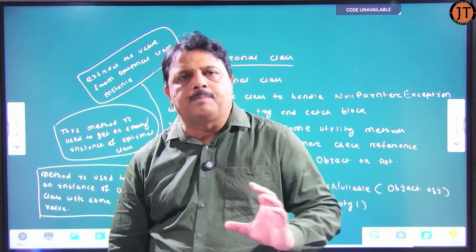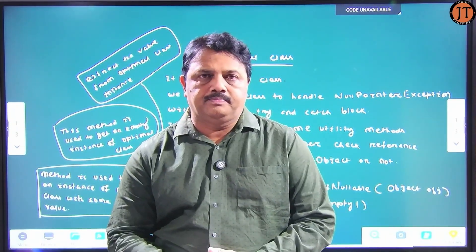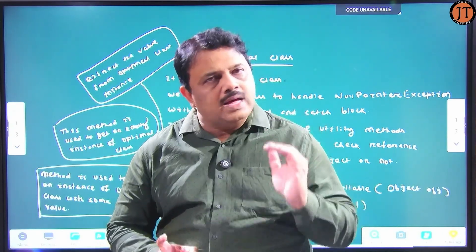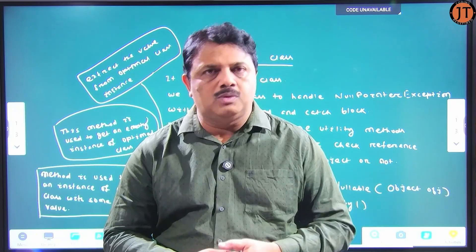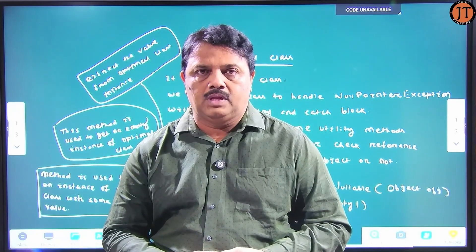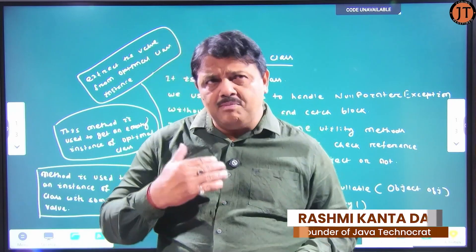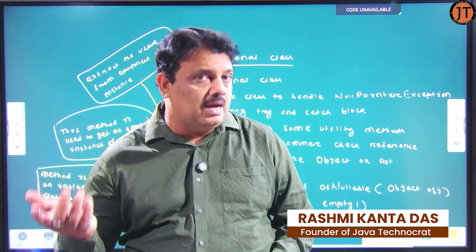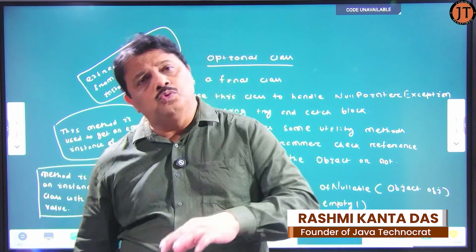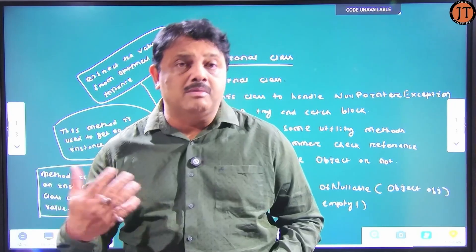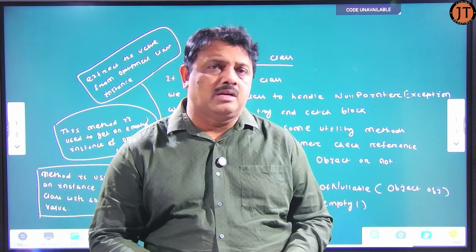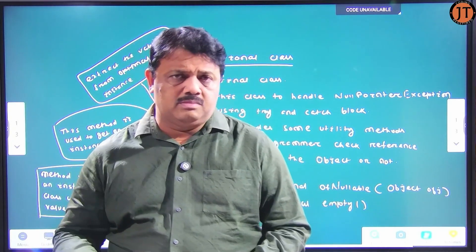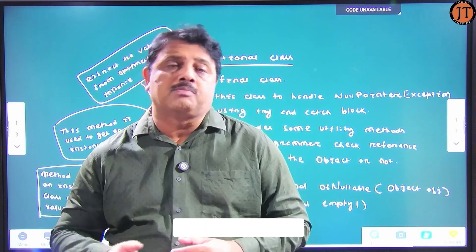Good morning everybody. Today's topic is Optional class — it is one of the important classes in Java. This class is basically used to avoid NullPointerException without using try-and-catch block. Sometimes we face the problem that if a reference does not point to an object of the class and we call any method or member through that reference, the program must generate a NullPointerException.